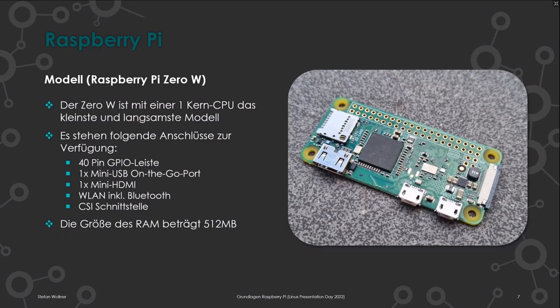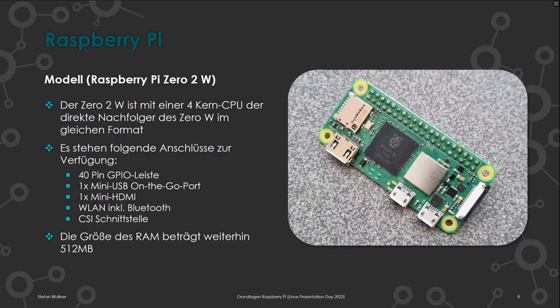Die älteren Modelle haben einen normalen HDMI-Port. Der Zero hat auch eine CSI-Schnittstelle für eine Kamera. Seit neuestem gibt es den Nachfolger Zero 2 W – der Modellname ist nur um eins erhöht, aber es hat sich signifikant etwas geändert: Man wechselte von der Ein-Kern-CPU zu einer Vier-Kern-CPU. Der RAM beträgt immer noch 512 MB, die Anschlüsse sind gleich, aber es gibt einen deutlichen Performance-Unterschied. Auch dieses kleine Modell kann man zum Ausprobieren von Linux nutzen.